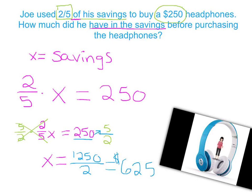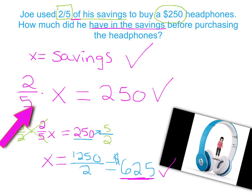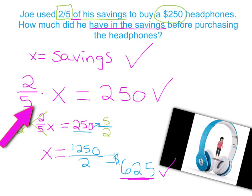So define the variable, write the equation, and solve — this is saying that his total savings was $625, and he had to spend two-fifths of his savings to buy the headphones at $250. So there's your full lesson: one-step equations with word problems, making real-life examples with these equations. Good luck with the lesson!